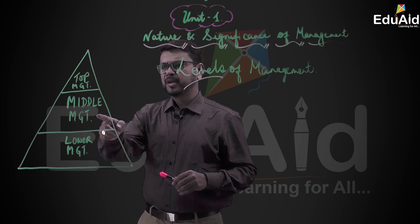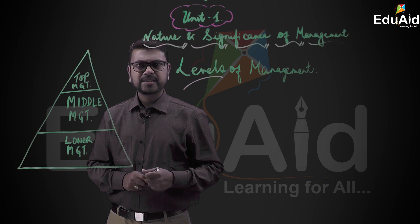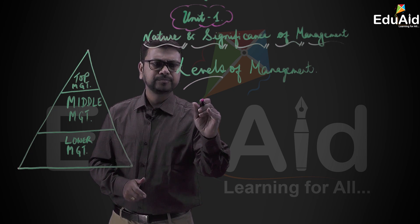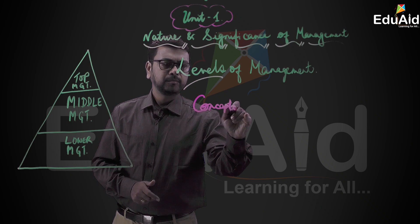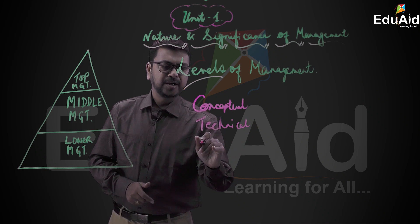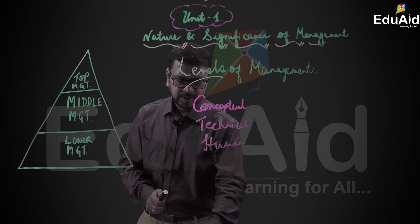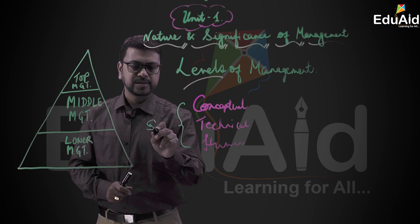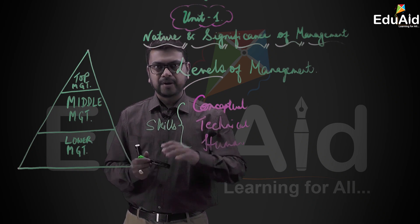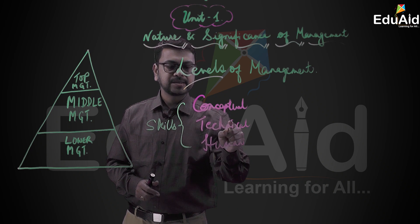When talking of top, middle, and lower level management, their skill levels are slightly different. All skills can be classified into three types: conceptual skills, technical skills, and human skills.